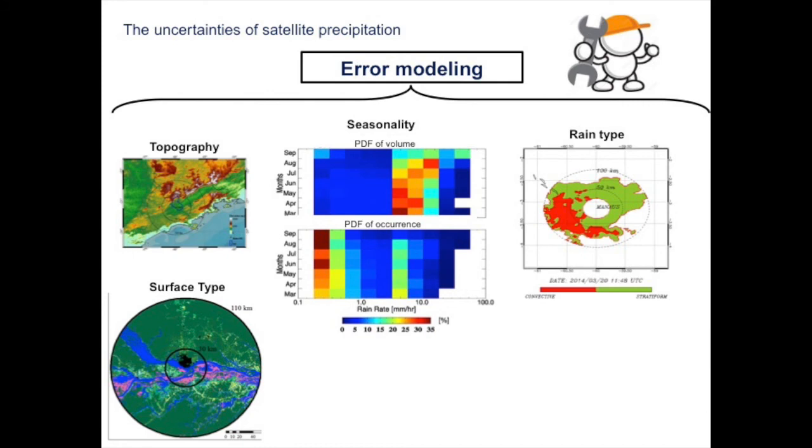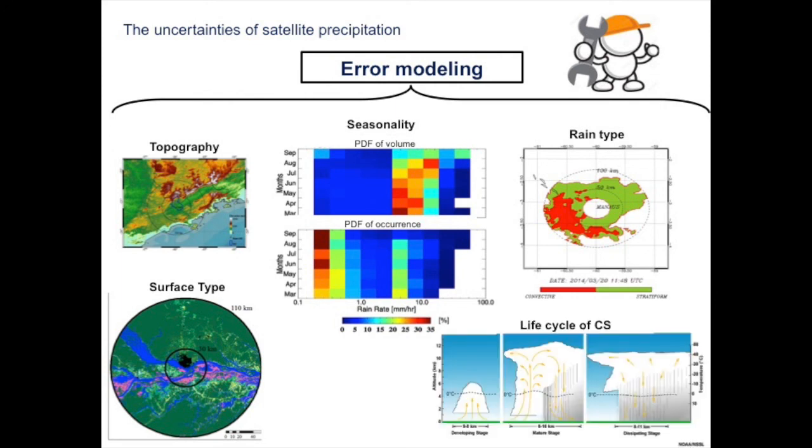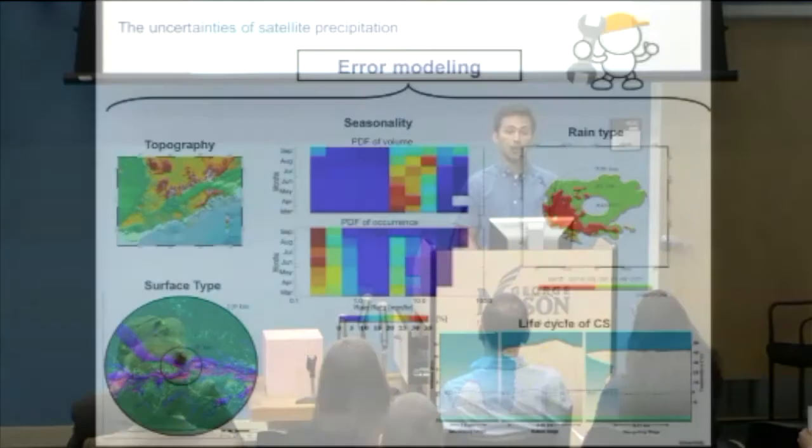Another point is how to classify the precipitation and how the error can be related with convective systems and stratiform precipitation. The error really varies with the type of precipitation. And the last point is that the error varies from the different stages of the precipitation system, from the beginning to the dissipating stage.